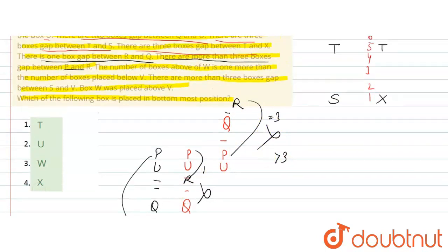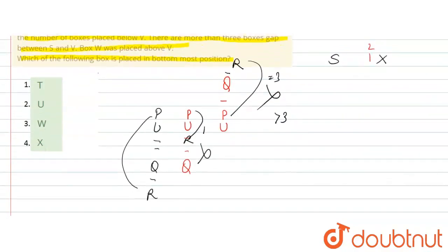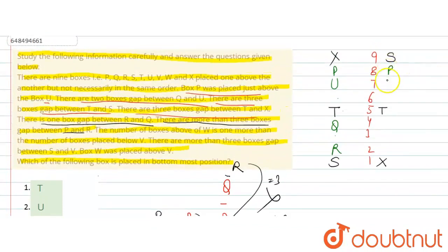Placing the values, here we have P, then U, then 2 gaps — 1, 2 — then Q, then 1 blank, then R. Similarly in the other arrangement: P, U, then Q, then R. The condition about boxes above W being 1 more than boxes below V is applied here.